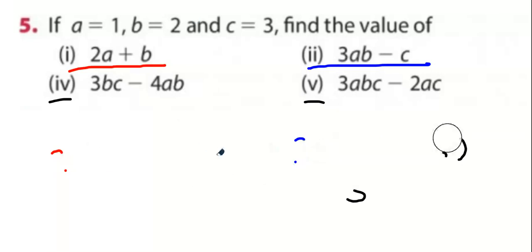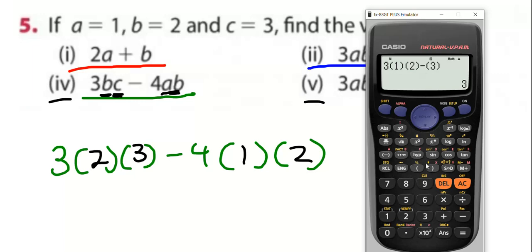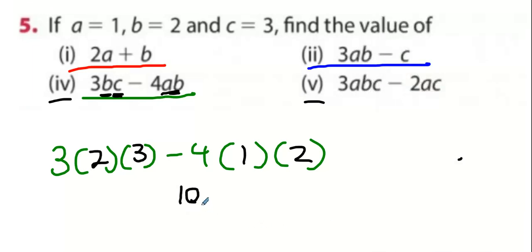So, part four, which I'm going to call the green question. Three blank blank minus four blank blank. What goes in here? B, which is two. What goes here? C, which is three. And then four A B. Then you just go over to your calculator and you enter it all in exactly as it looks. And most of you got an answer of ten.